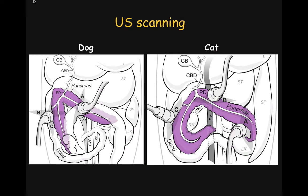The pancreas is located along the greater curvature of the stomach, the descending duodenum, and the cecum and part of the colon. This explains the challenge of identifying the small organ surrounded by gas-filled GI segments. Small anatomical variations exist between dogs and cats. In dogs, the stomach usually is perpendicular to the spine, while in cats it is lying obliquely.